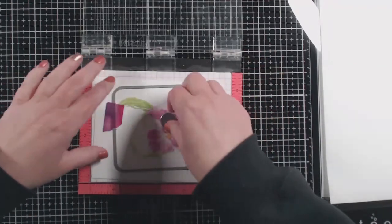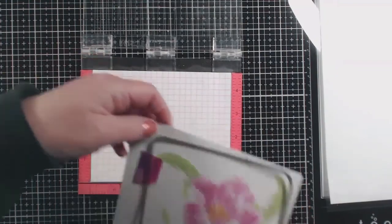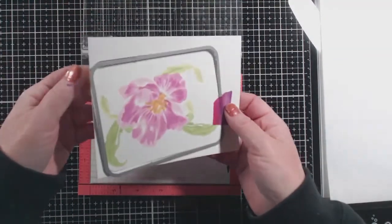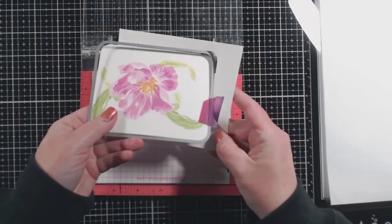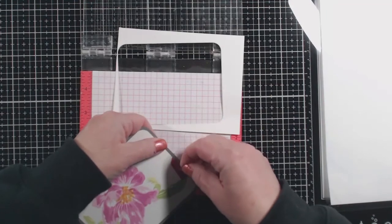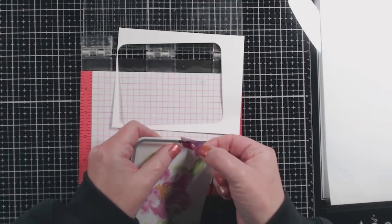And here we are. I went ahead and I'm going to die cut this with these rounded cornered frame dies. And I realized I kind of stamped that flower crooked, so I cut it so that it would be straighter, taking it out of that die right now.